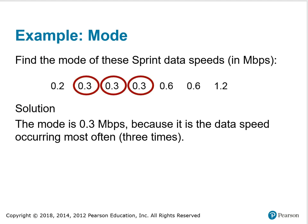Here's an example. Find the mode of these sprint data speeds in megabits per second. Notice that the circled numbers are repetitive. 0.3 is repeated three times. So three separate data values of the seven that are presented are 0.3. Therefore, 0.3 megabits per second is the data speed that occurs most often and is the mode.